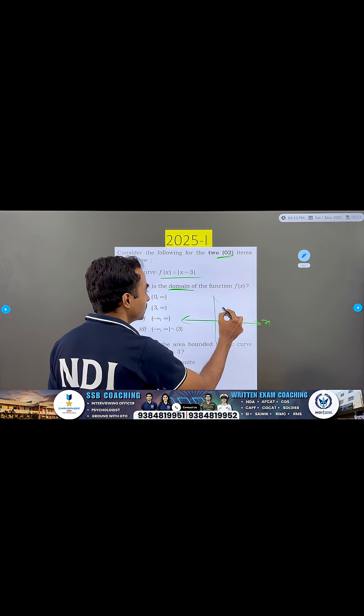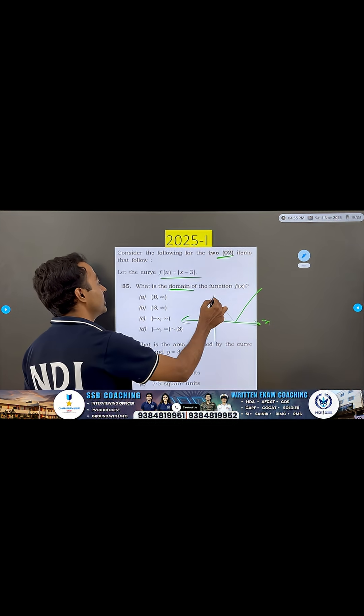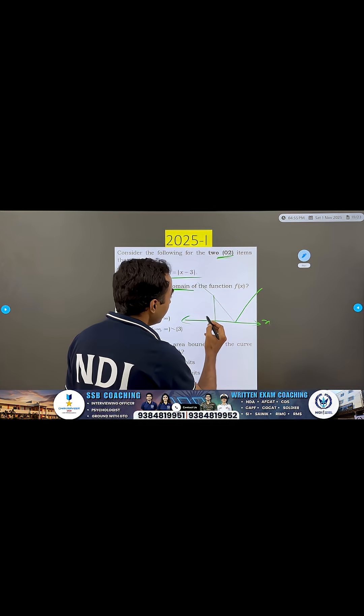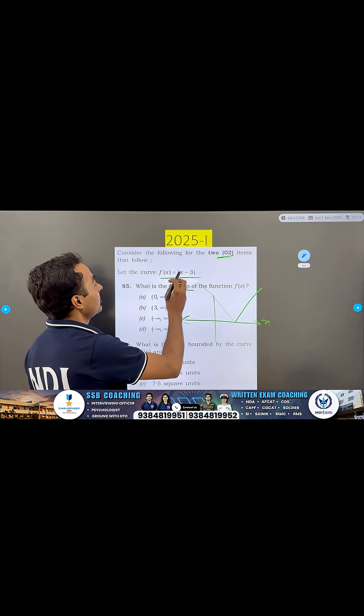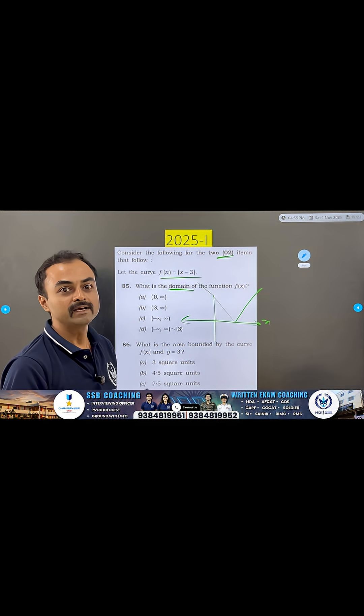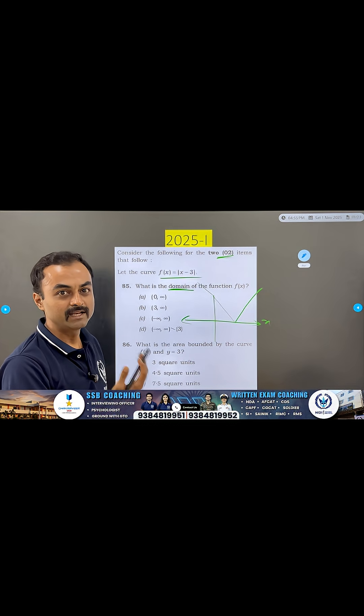So, if I try to draw this graph of this function, it is going like this, right? So, I can take any value of X. There is no issue because the function is not going to become indefinite.